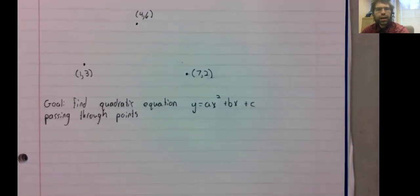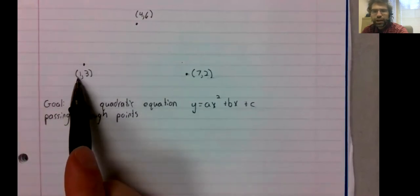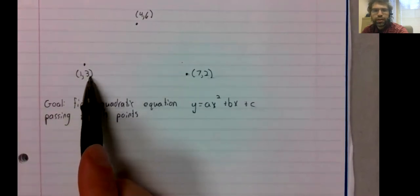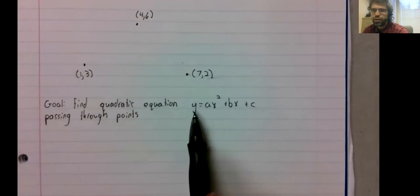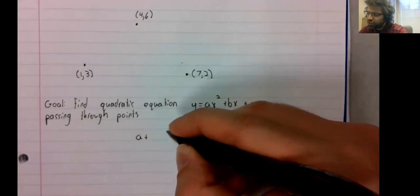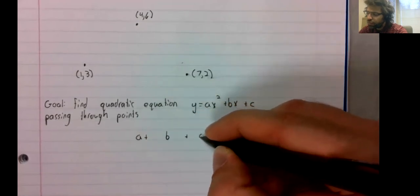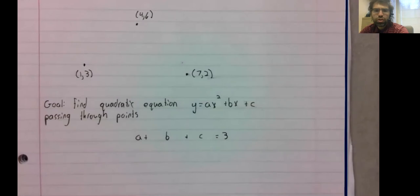You can think of this as a linear algebra problem, because you can reduce it to solving a three system, three unknown equation. So when x equals one, y equals three. If we plug x equals one, y equals three into this, we get a plus b plus c equals three.